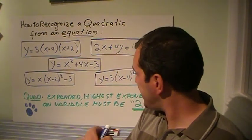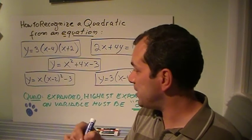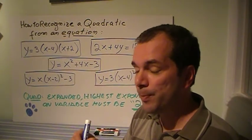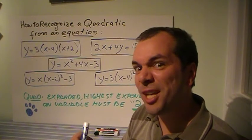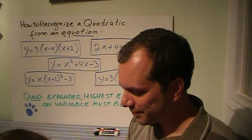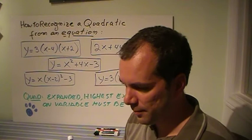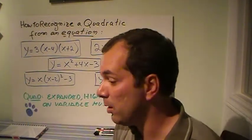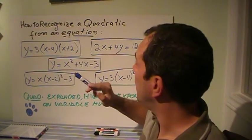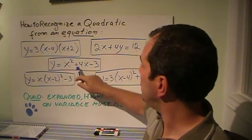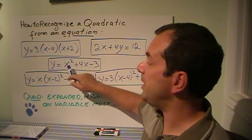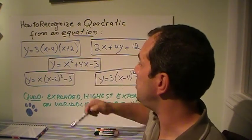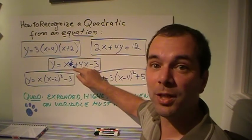So, when it's expanded, the highest exponent on the variable must be two. Let's look at this one. Is this an expanded form? Yes, it's just adding and subtracting. So therefore, the highest exponent is two, and that is a quadratic function.